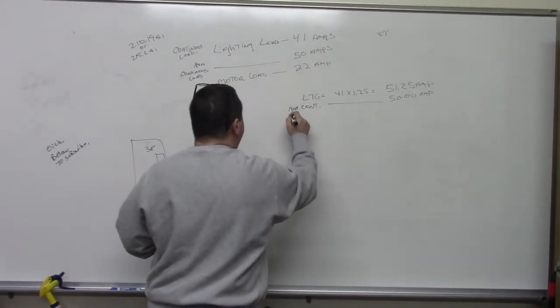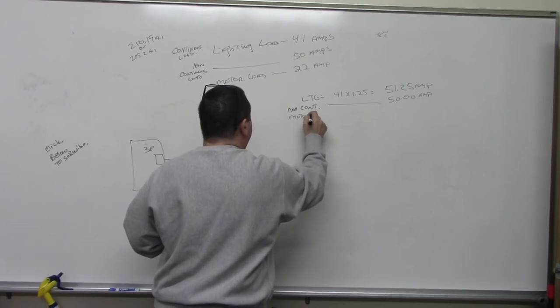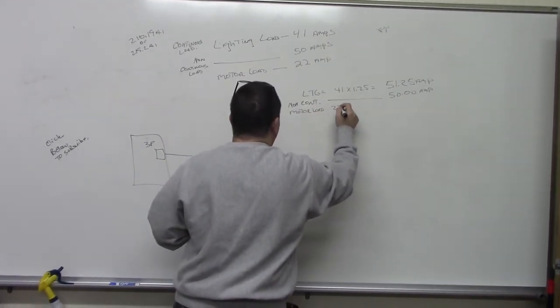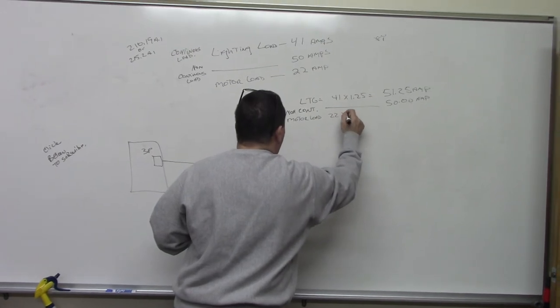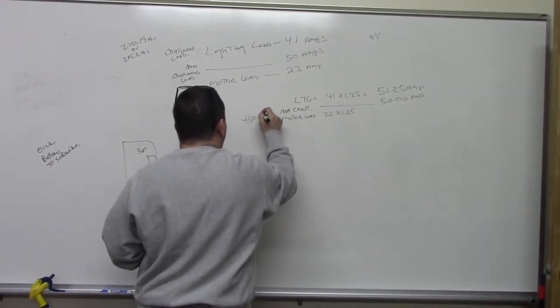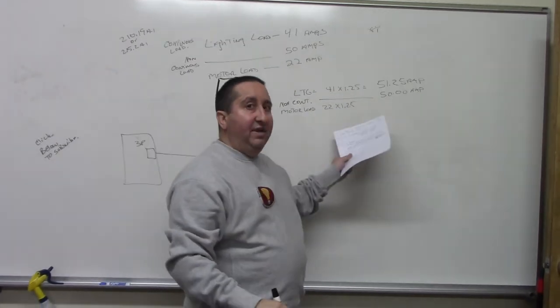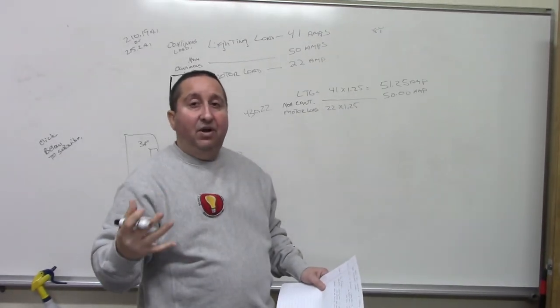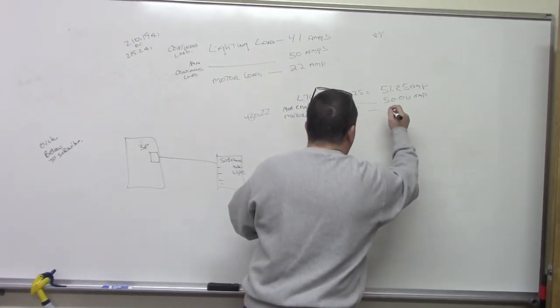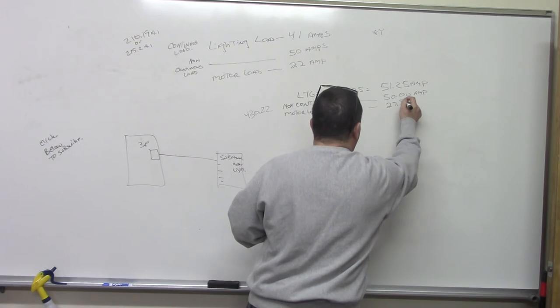And then we have the motor load. And it's 22 times 1.25. And you'll find that in 430.22. Again, for the startup and everything for the motor, you allow 125%. So when we do that, we come out with 27.50 amps.